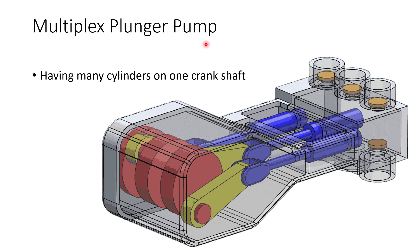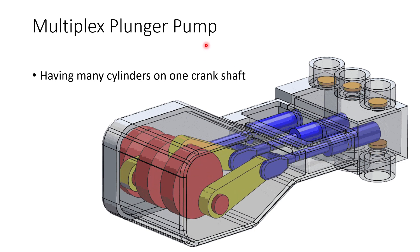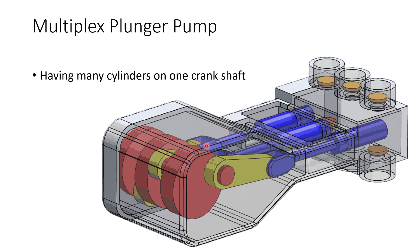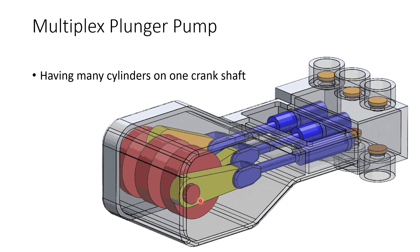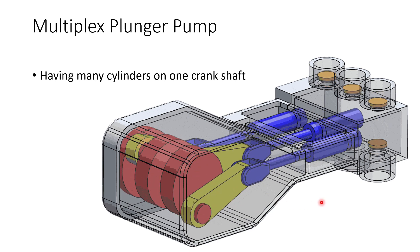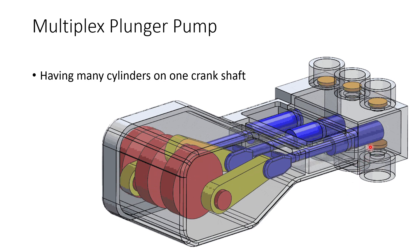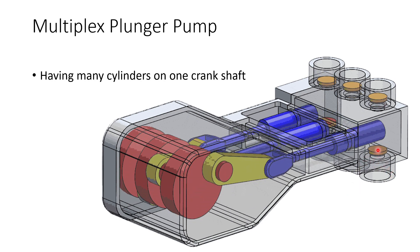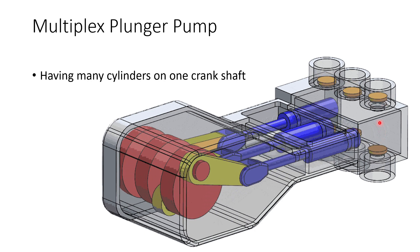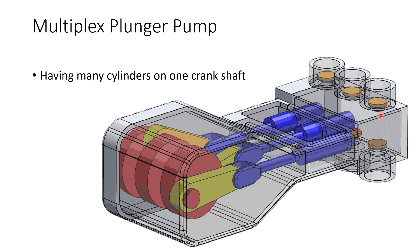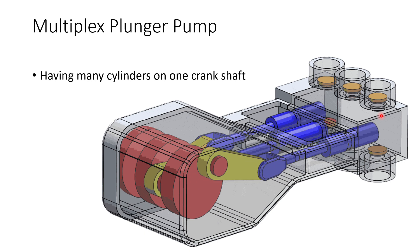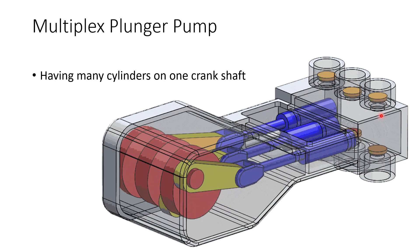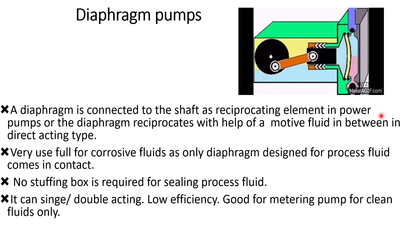In this animation, we can see a multiplex plunger pump. This pump has three plungers operating on a single crankshaft, each offset at an angle of 120 degrees, so there is always a discharge from the pump. You can see how the suction valve opens and then how the discharge valve opens when the suction valve is closing. This pump gives much more flow and the pulsation is much less.